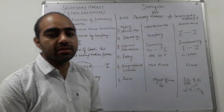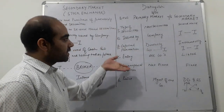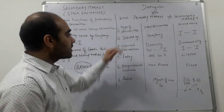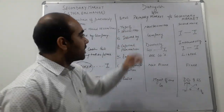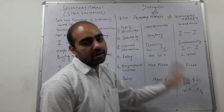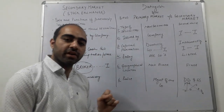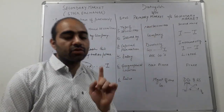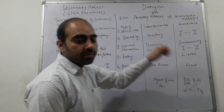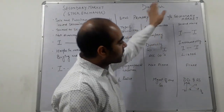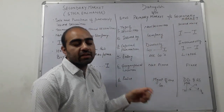Now moving ahead towards the differentiation chart of primary and secondary market. Basis number one is the type of securities. In the primary market, new securities are traded — fresh issue of securities, new shares. On the other hand, in the secondary market, securities that were already in the market are traded — meaning previously issued, secondary securities are being traded.